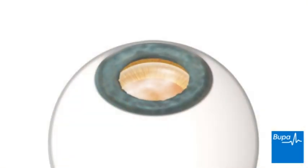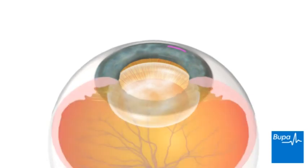A tiny cut is made on the surface of your eye. The cut or opening is usually so small that no stitches are needed after the operation.